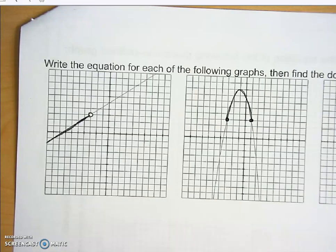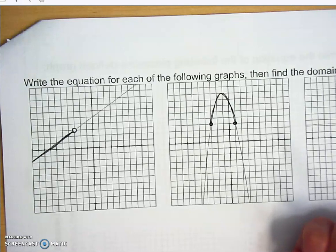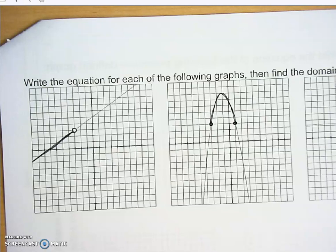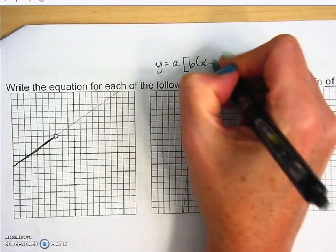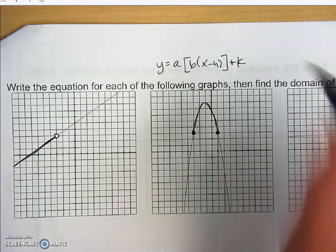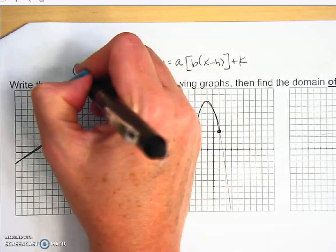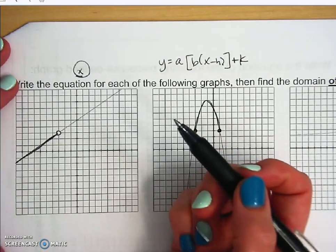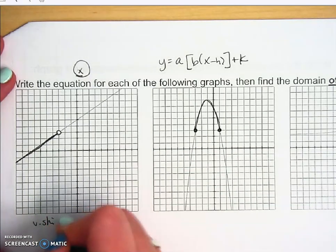For this first one, you can use transformation form or slope-intercept form — I find slope-intercept form faster, but I'll use transformation form here to stay consistent. If you want to use slope-intercept form, that's fine. We notice that our parent function here is x.